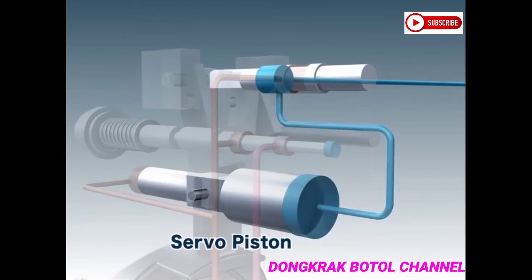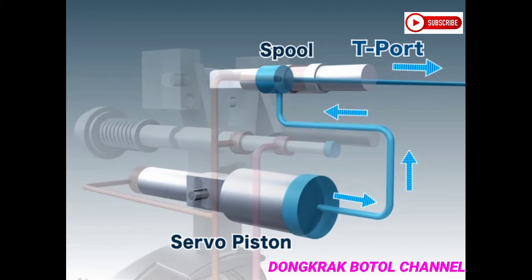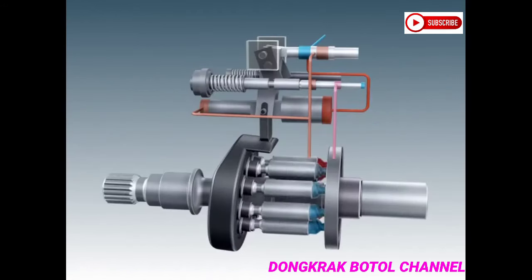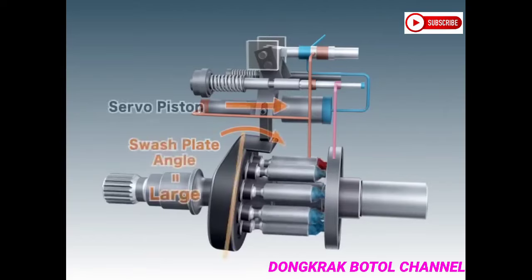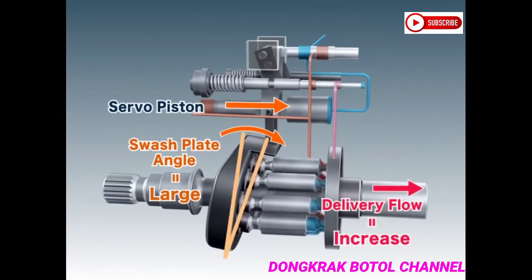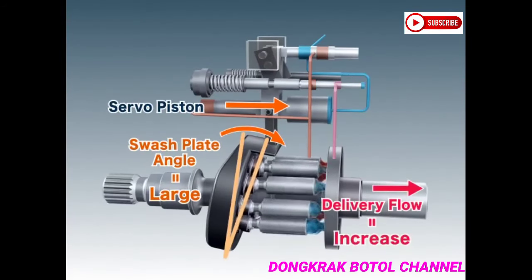As a result, the pressure within the larger side of the servo piston is released through the tank port, which then moves the servo piston. As the servo piston moves, the inclination of the swash plate increases, increasing the delivery flow.